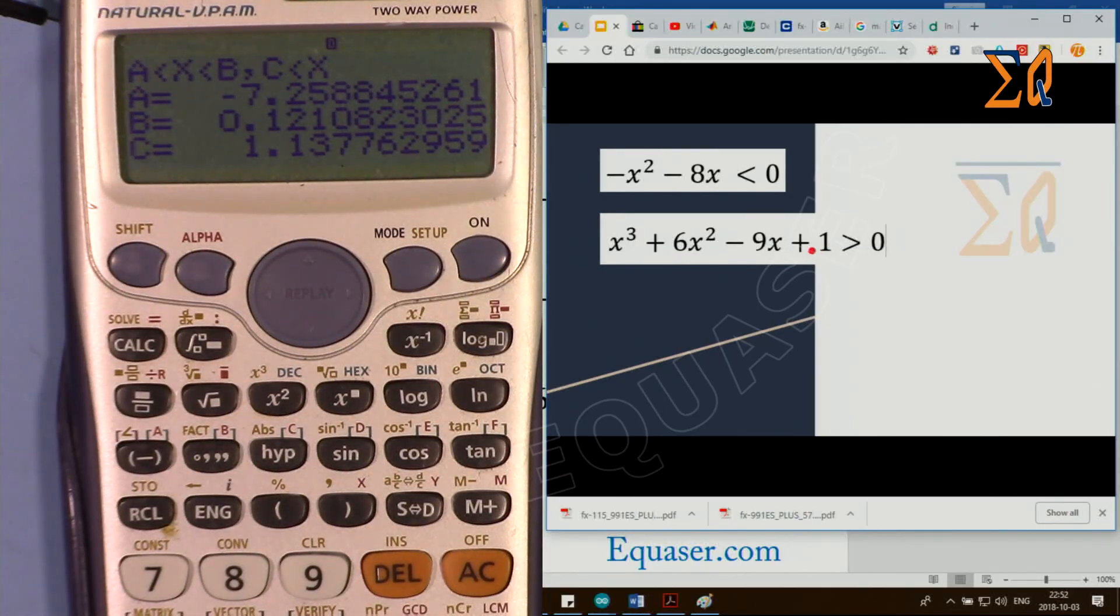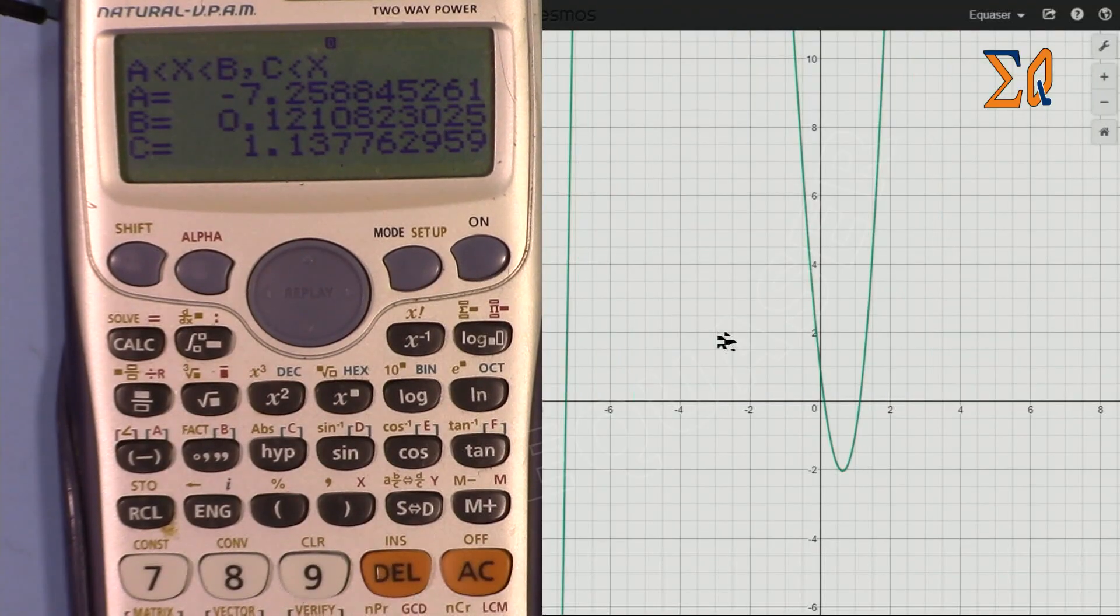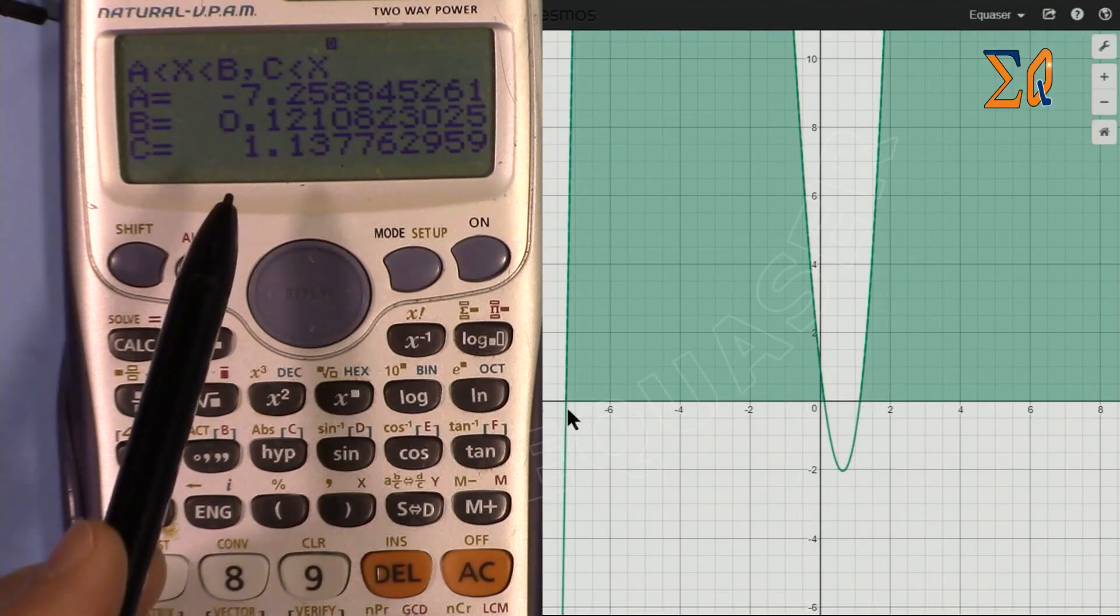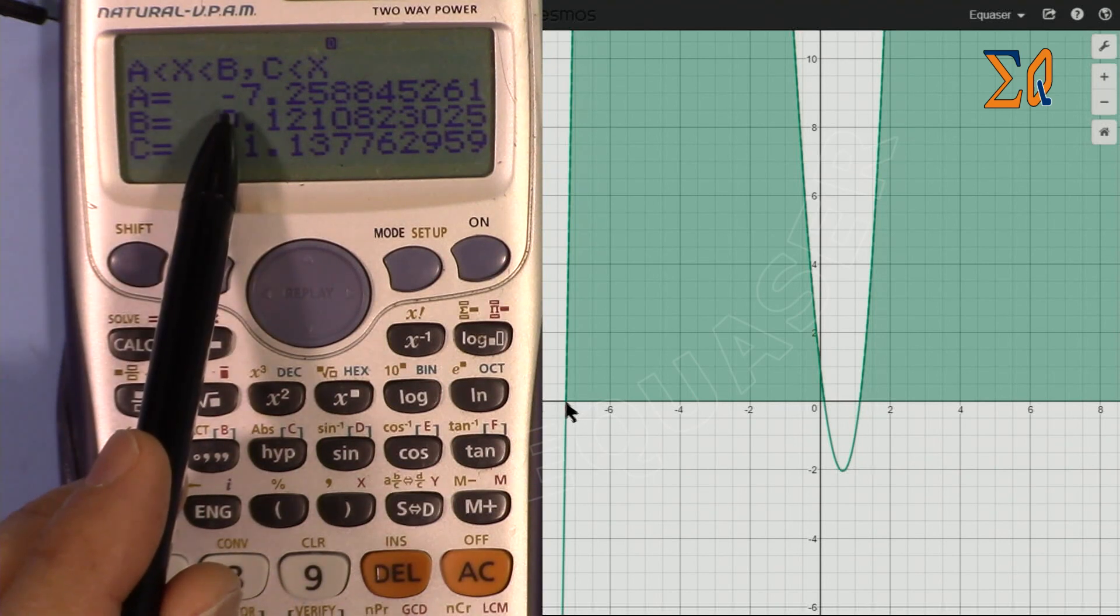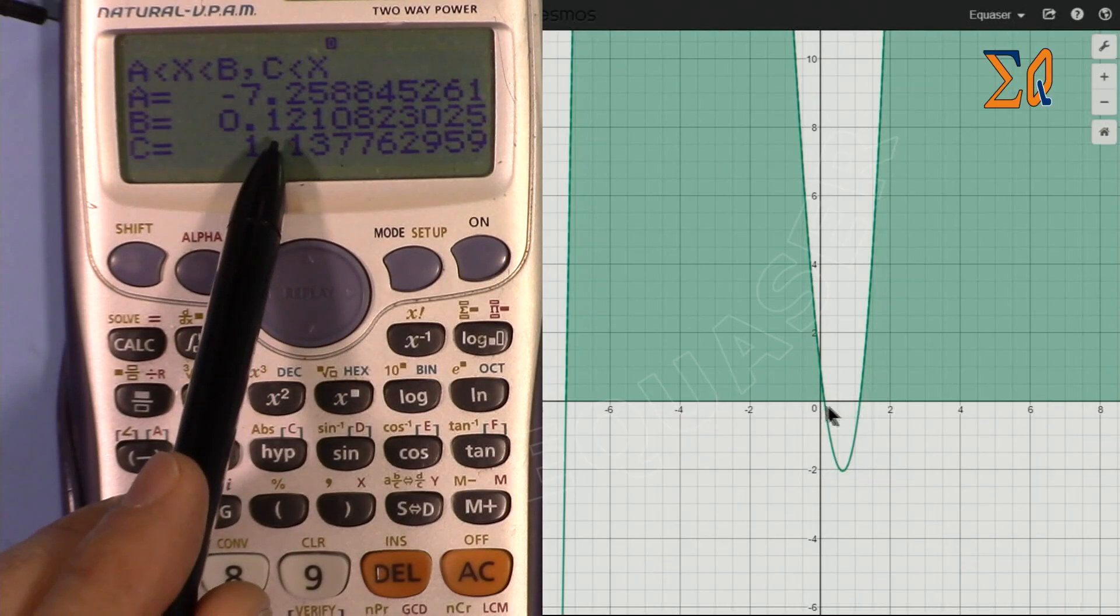And this is our plot. If we eliminate those shades we will see that when x is bigger than −7 at this point and smaller than 0.12 at this point, and when x is bigger than c, bigger than 1.137.